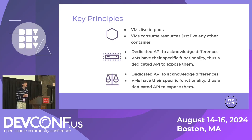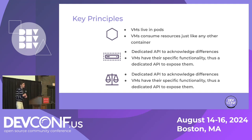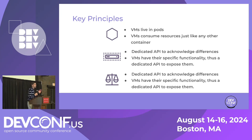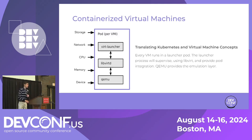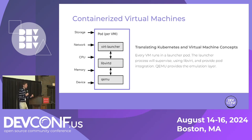What are the key principles of KubeVirt virtualization? Virtual machines run as pods — normal pods in Kubernetes. They consume resources just like any other pod; you can put constraints on them, give them limit ranges and requests. There is a dedicated API because there are differences between a VM and a pod — custom resource definitions similar to any other Kubernetes tool. Under the covers, every VM runs in a launcher pod that uses LibVirt for pod integration and QEMU emulation to provide the actual emulation layer for the virtual machine.